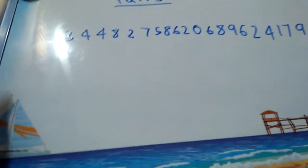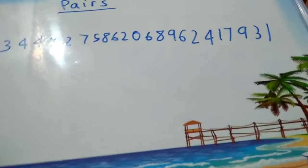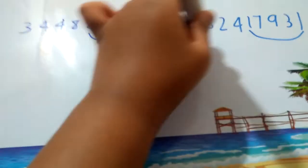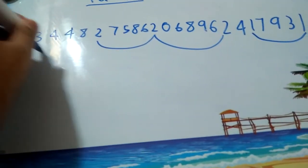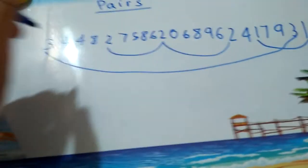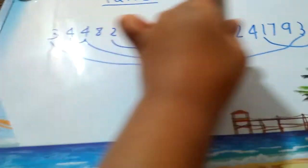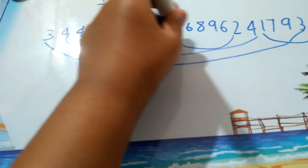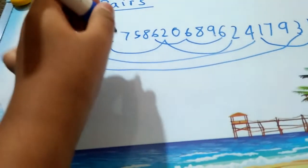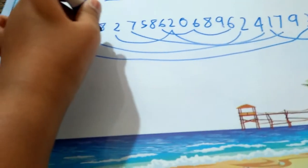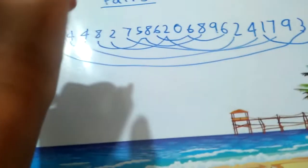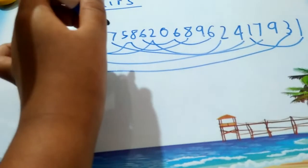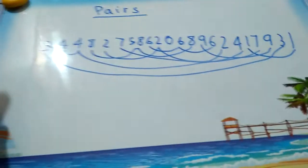So here now let's check the pairs. One has a pair, two has three pairs, three has a pair, four has also three pairs. Seven has three pairs, eight has also three pairs, and nine also has a pair.